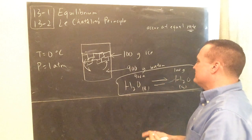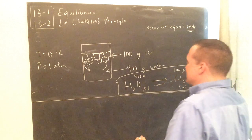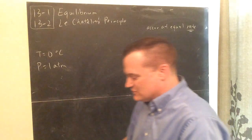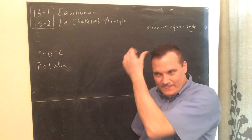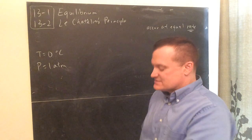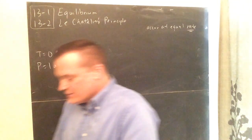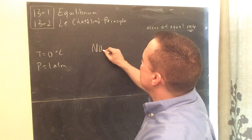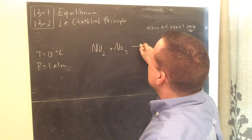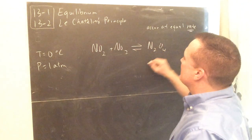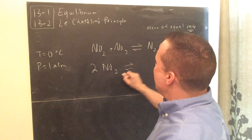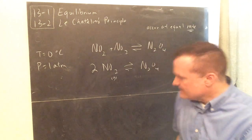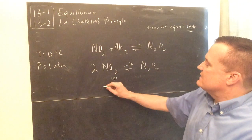That's called phase equilibrium, which we touched on in chapter 10. Chemical equilibrium says the same thing is true for a chemical system. Here's an example: 2 NO₂ gas is in equilibrium with N₂O₄. We also showed this at AP readiness — NO₂ is a reddish-brown gas and N₂O₄ is colorless.